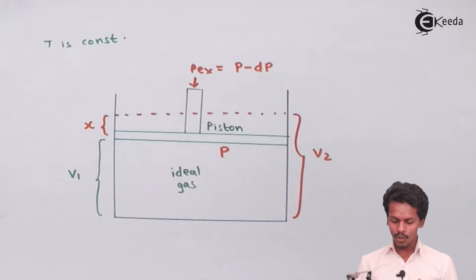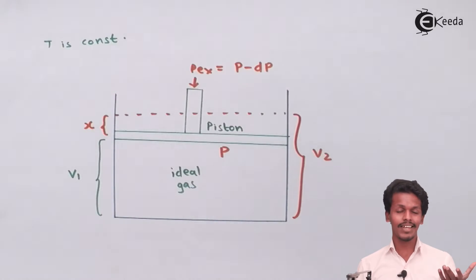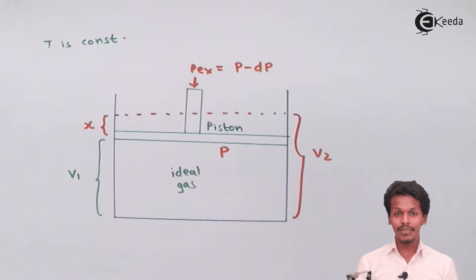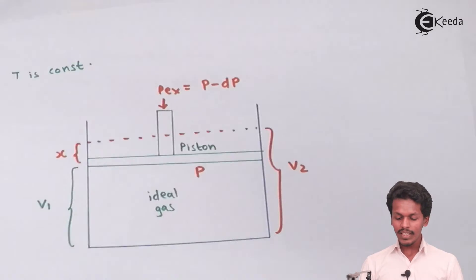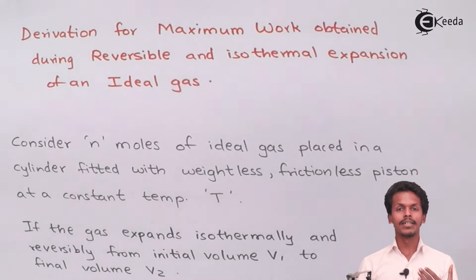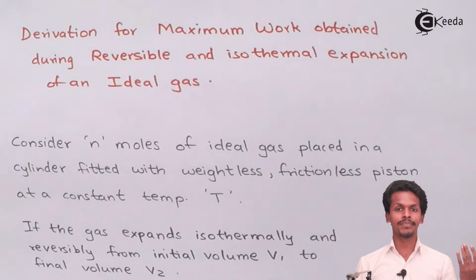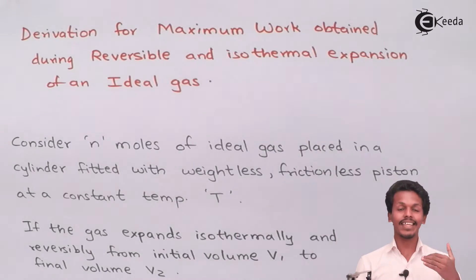This is similar to the previous derivation, but the conditions are different. In the earlier derivation the process was irreversible and isothermal, whereas here the process is reversible and isothermal. For maximum work, the driving force and opposing force must have an infinitesimally small difference between them.